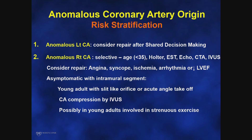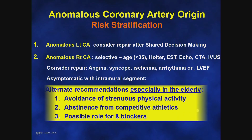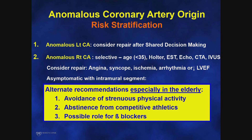In young adults heavily involved in strenuous exercise, it is reasonable to consider surgical repair — provided a surgeon trained in the unroofing procedure is available. Coronary artery stenting can also be considered at an experienced center. For elderly patients or those not interested in intervention, the best option is avoidance of strenuous physical activity, since 50% of events occur during or shortly after exercise. Abstaining from competitive athletics is recommended. Beta blockers have a potential role, but proven benefit has not been established.